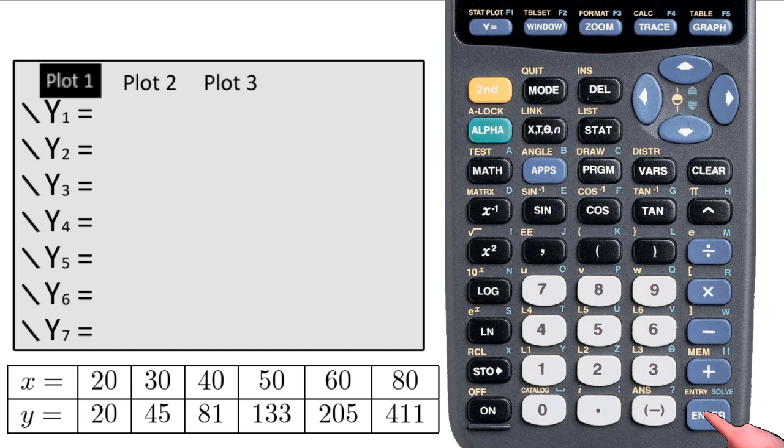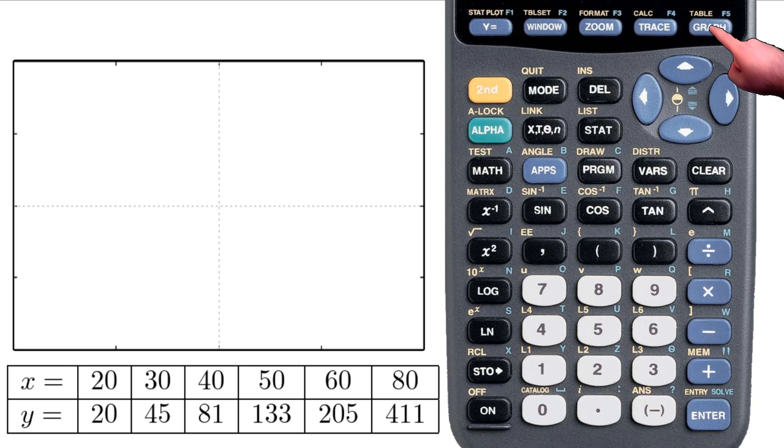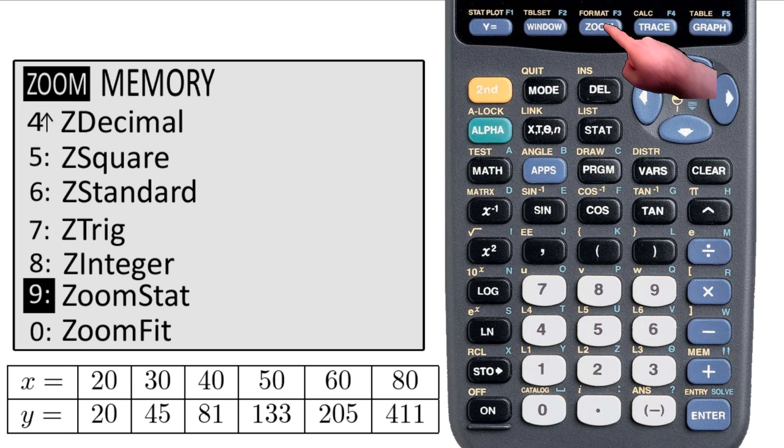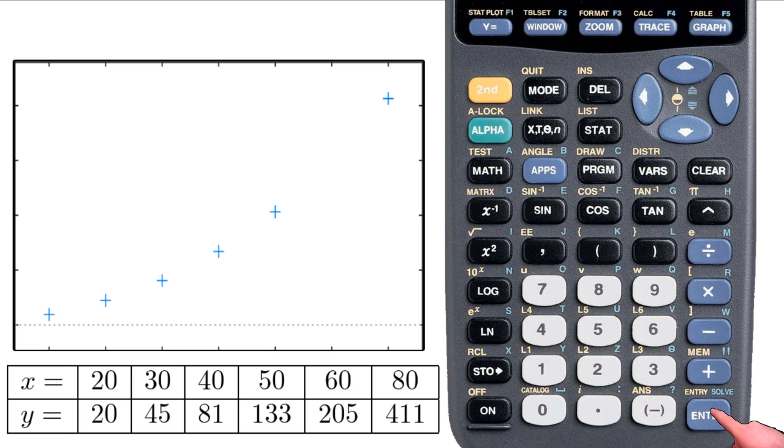So now Plot 1 is highlighted, so I can go to the graph, and I see nothing. Why is that? Because the first point is 20-20, but my screen is set on Z Standard, which only goes up to 10-10. So I go to the Zoom menu and go to the second-to-last option, Zoom Stat. This arranges the window so that I can see the points for the plots. And there they are.